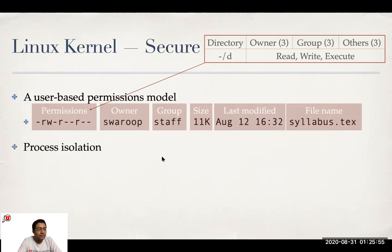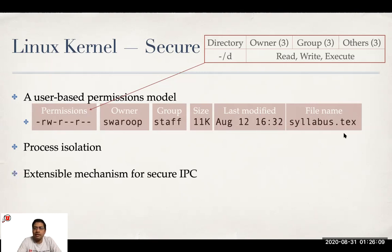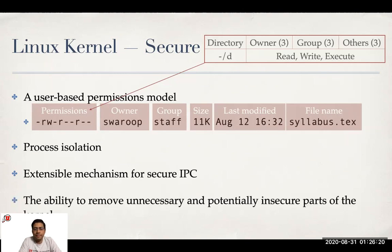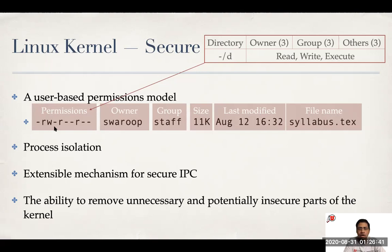In addition to that, Linux can also support process isolation, so each process can run independently of the other. We'll see how that plays a role in security for Android. And in general, inter-process communication — one process communicating with the other — has secure, extensible mechanisms. Being open source, you can remove unnecessary and potentially insecure parts of the kernel and have it specific to the mobile device. These are some factors which played a role in Google deciding on Linux in comparison to other operating systems.